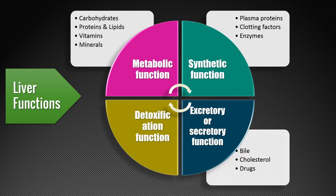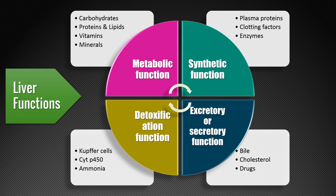Detoxification function means toxic or harmful chemicals — whether by ingestion or generated within the body as a result of metabolism — are converted to non-toxic material. This process is called detoxification. For the detoxification process, the liver has enormous cells called Kupffer cells, and also an enzyme system called Cytochrome P450. These Kupffer cells and Cytochrome P450 play a very important role in detoxification. For example, toxic ammonia is converted to urea in the liver, and various drugs, harmful chemicals, and free radicals are also detoxified in the liver.